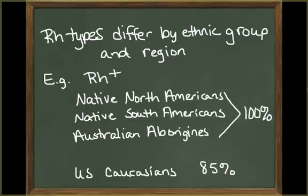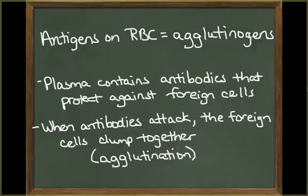Just like the ABO typing, RH types differ by ethnic group and by region. For example, the percentage of RH positive blood types in Native South Americans, Native North Americans, and Australian Aborigines is 100%, whereas with U.S. Caucasians, this percentage drops to 85%.